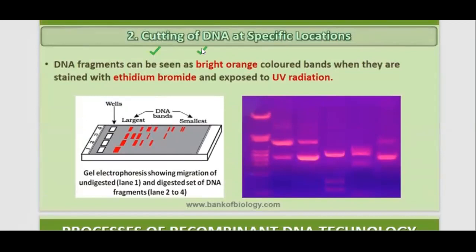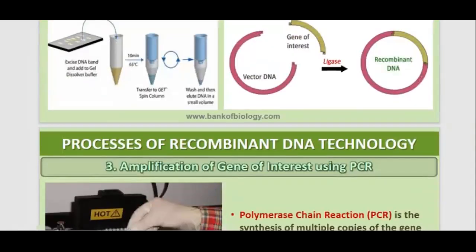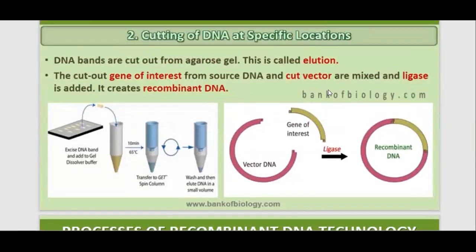DNA fragments can be seen as bright orange colored bands when they are stained with ethidium bromide and exposed to UV radiation. We can see these DNA fragments under UV rays as bright light. DNA bands are cut out from the agarose gel — this process is called elution, which is an important term. The cut-out gene of interest from the source DNA and the cut vector are then mixed and ligase is added, creating the recombinant DNA.